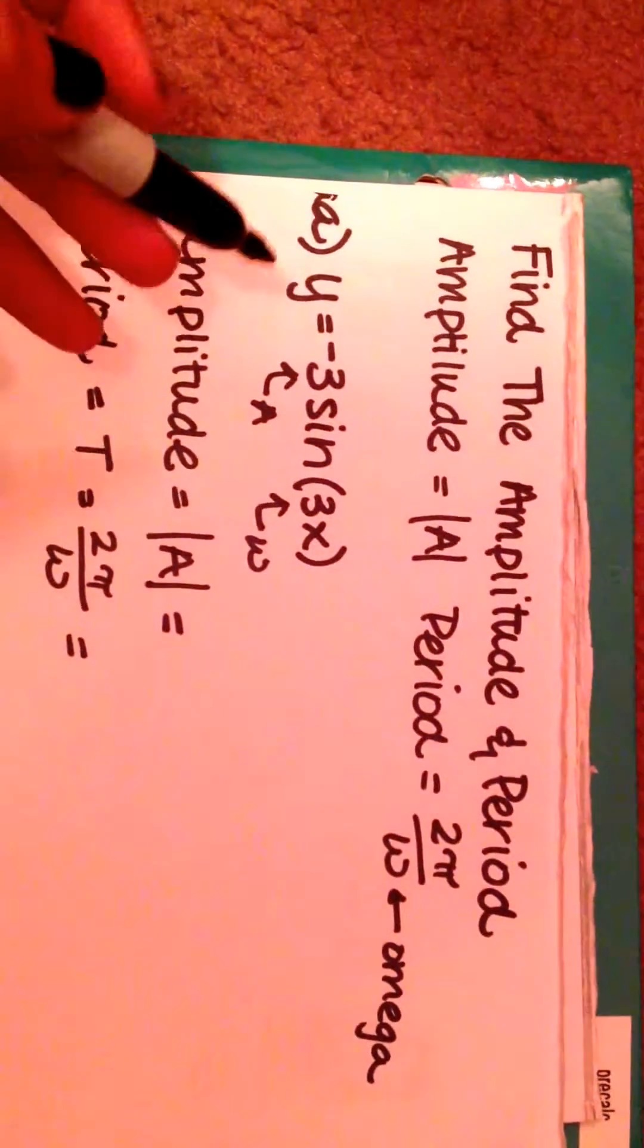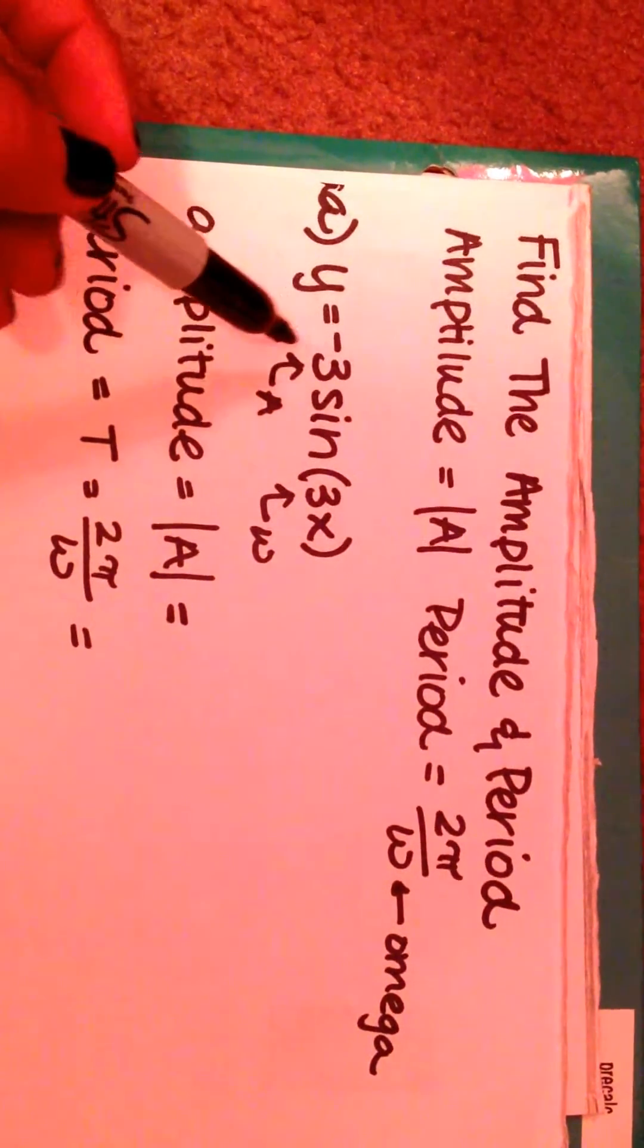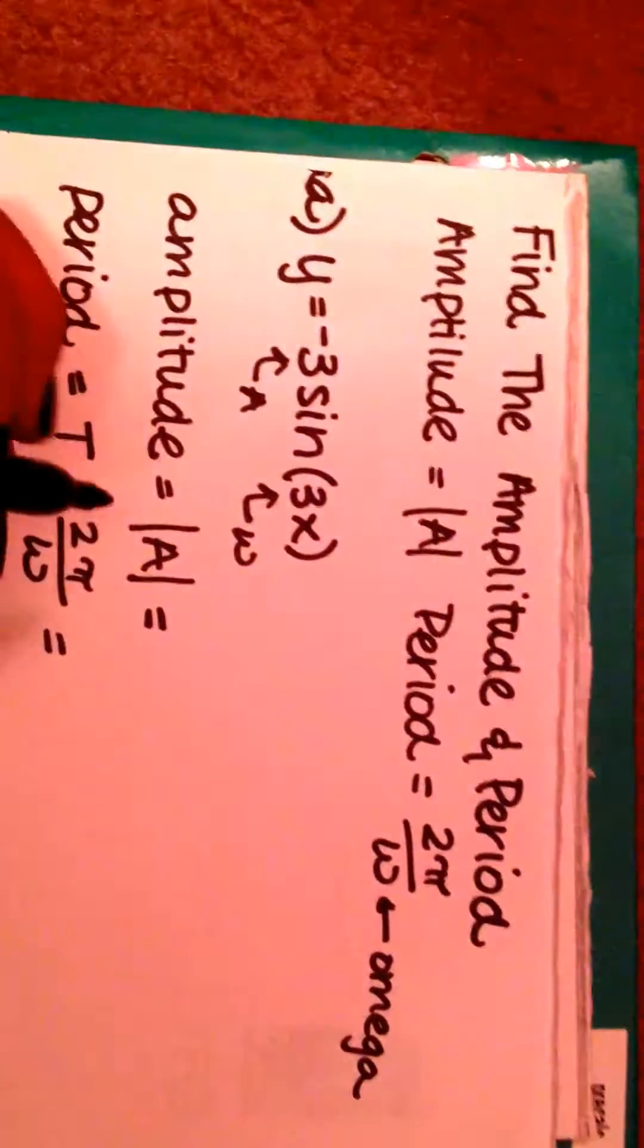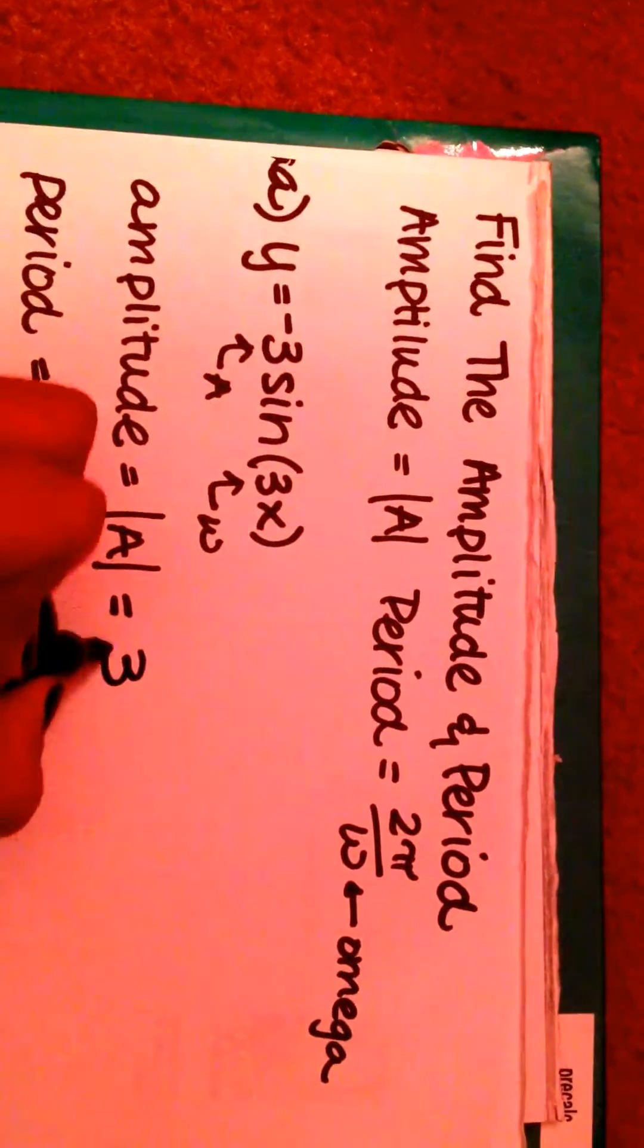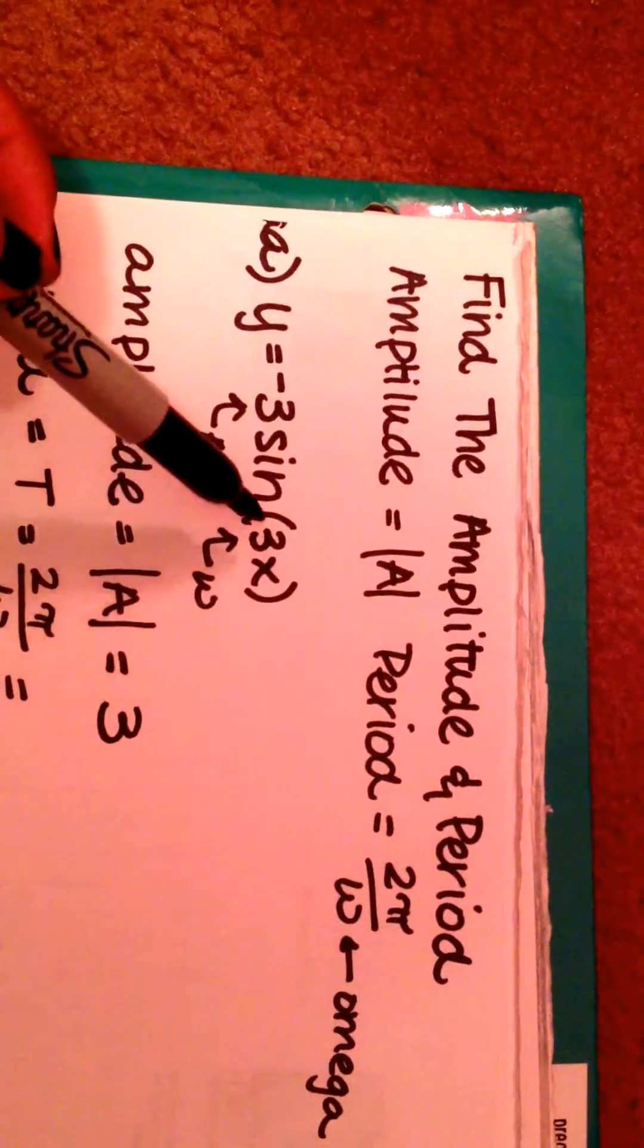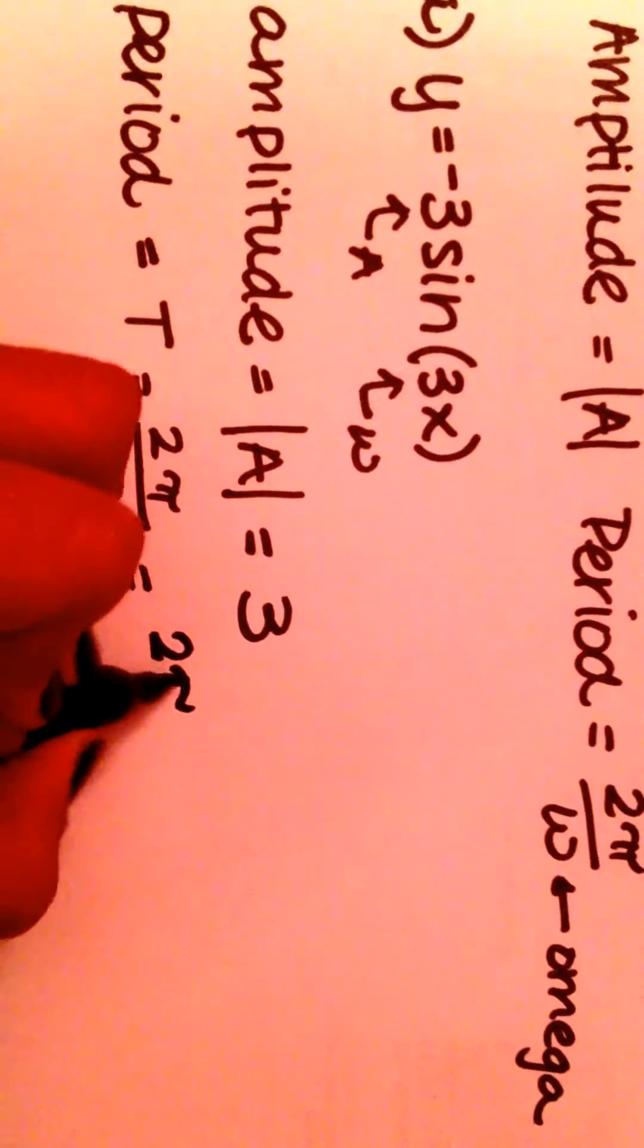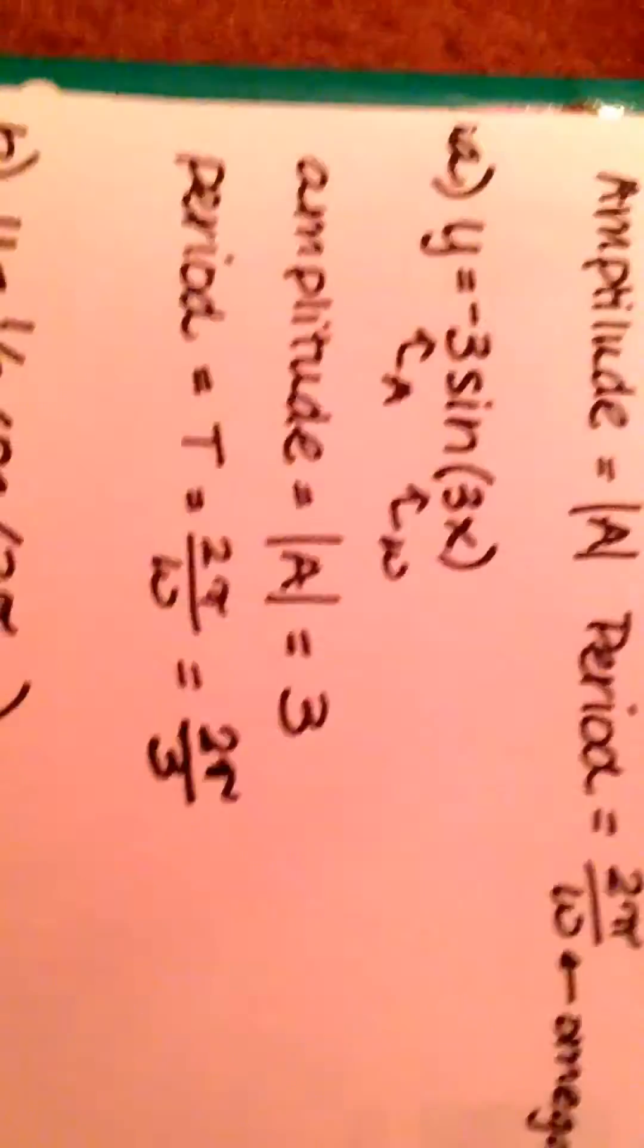Our first question is Y equals negative 3 sine of 3X. Negative 3 is our A for our amplitude, so the absolute value of negative 3 is 3. And our period is 2 pi over omega, which is 3. So our period is 2 pi over 3.